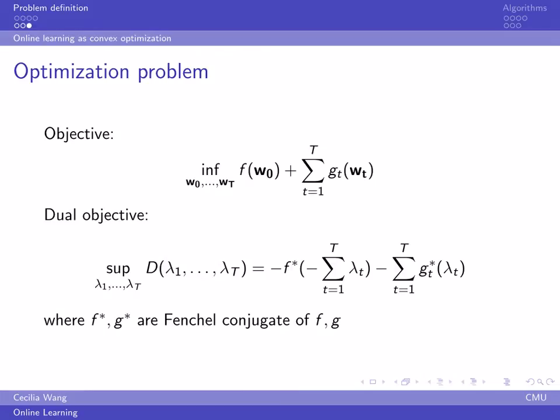Now we have a convex programming problem, so we can find the dual objective of this problem. Here the function f is the measure of complexity of omega, and we denote the loss function as function g. We can find the dual objective as we show in the slide. Here f* and g* are Fenchel conjugates of the function f and g.